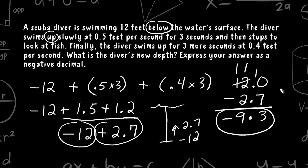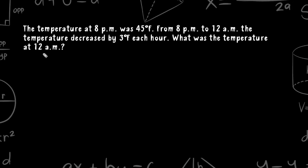Let's go ahead and solve the next problem. This problem reads that the temperature at 8 p.m. was 45 degrees. From 8 p.m. to 12 a.m., the temperature decreased by 3 degrees Fahrenheit each hour. What was the temperature at 12 a.m.?